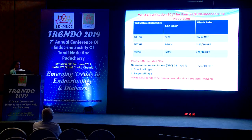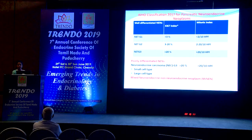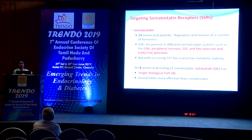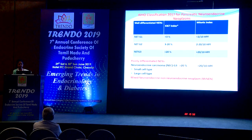The WHO classification for pancreatic neuroendocrine neoplasms includes: well-differentiated neuroendocrine neoplasms in three grades (Grade 1, 2, and 3), classified using the Ki-67 proliferation index and mitotic index. The other group is poorly differentiated neuroendocrine neoplasms, called neuroendocrine carcinomas, and there is also a mixed neuroendocrine or non-neuroendocrine neoplasm subset.